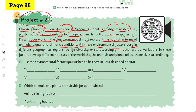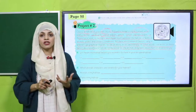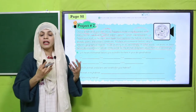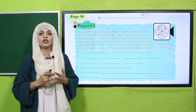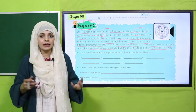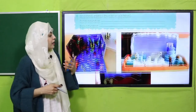Your model must represent the habitat in terms of animals, plants, and climatic conditions. All these environmental factors vary in different geographical regions, so life diversity exists accordingly. In other words, variation in these factors develops different habitats of the world. Animals and plants adjust themselves accordingly. Here we have given instructions on how to use different materials to create a habitat.